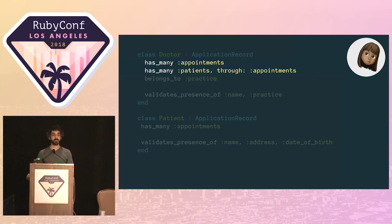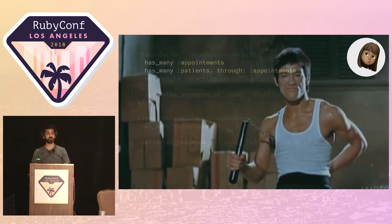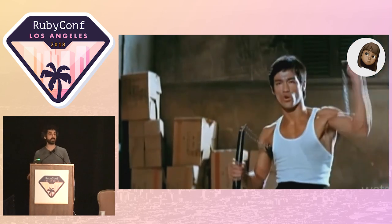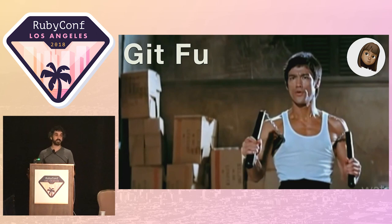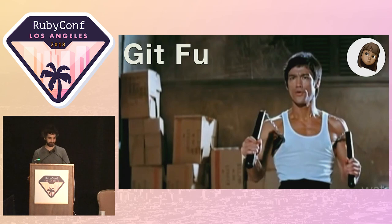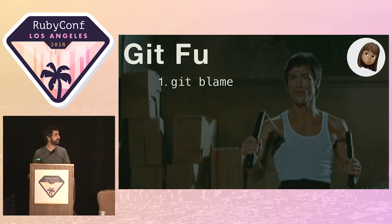On her last job, Seema was fortunate enough to work with a couple of wizened old developers who taught her the mystic and ancient arts of Git-Fu. She learned powerful techniques for searching through revision histories to discover how code got to be the way it is. She starts with a pretty basic Git-Fu technique: Git blame.